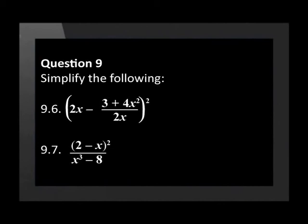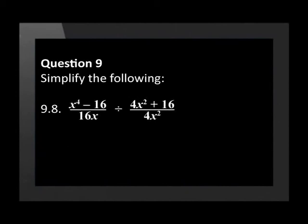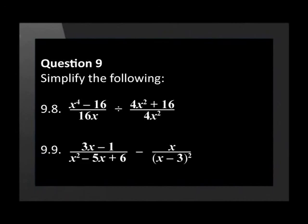9.7 is x to the power of 4 minus 16 over 16x divided by 4x squared plus 16 over 4x squared. 9.8 is 3x minus 1 over x squared minus 5x plus 6 minus x over x minus 3 squared.